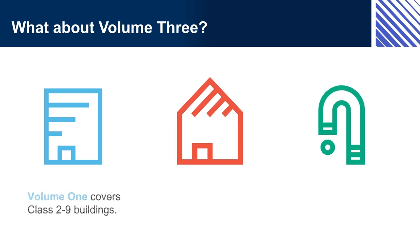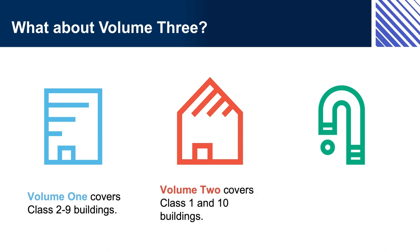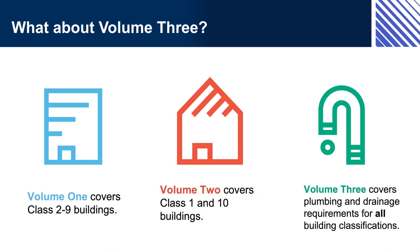Volume 1 covers Class 2 to 9 buildings. Volume 2 covers Class 1 to 10 buildings. Volume 3 covers plumbing and drainage requirements for all building classifications.